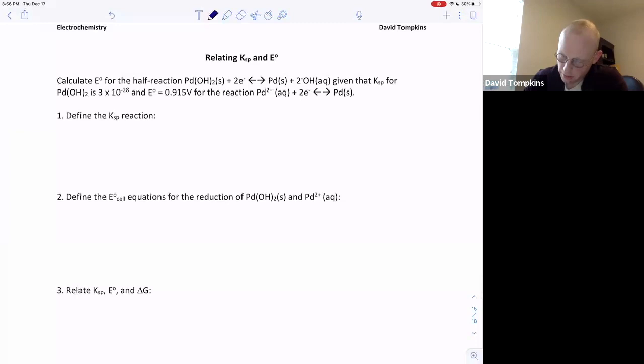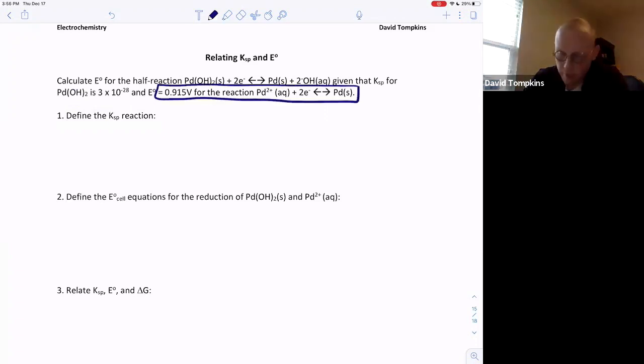We're going to consider finding the unknown cell potential or the half reaction potential for the reduction of palladium(II) hydroxide to palladium, and we're given some information about the solubility product of palladium hydroxide in aqueous solution and we're also given the reduction potential of free Pd²⁺ to Pd⁰.